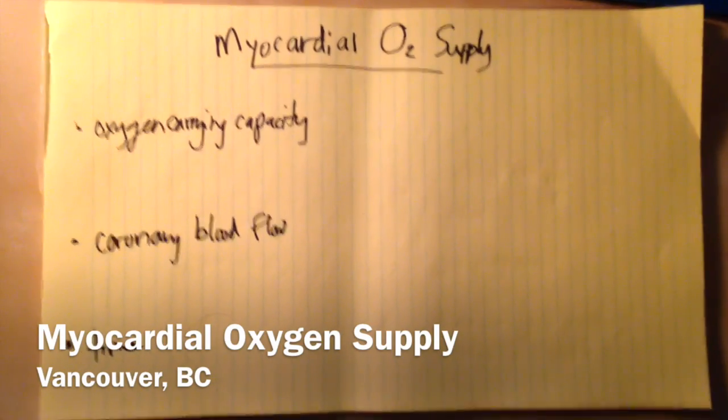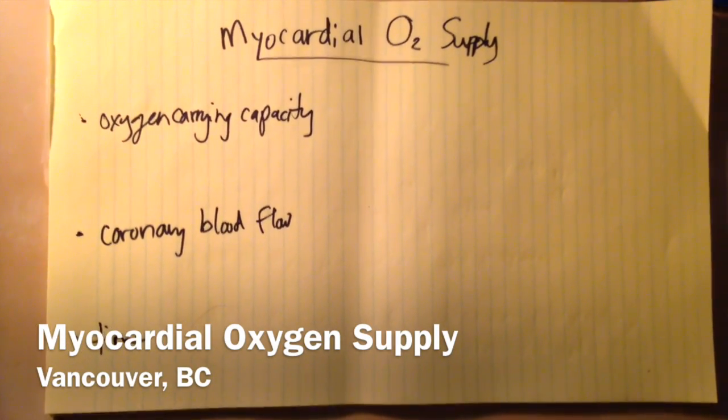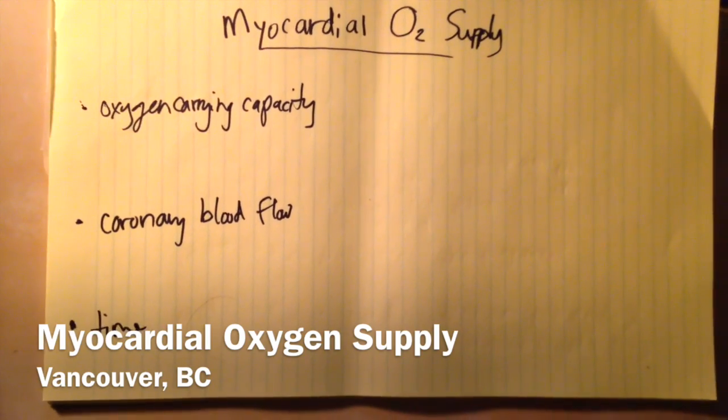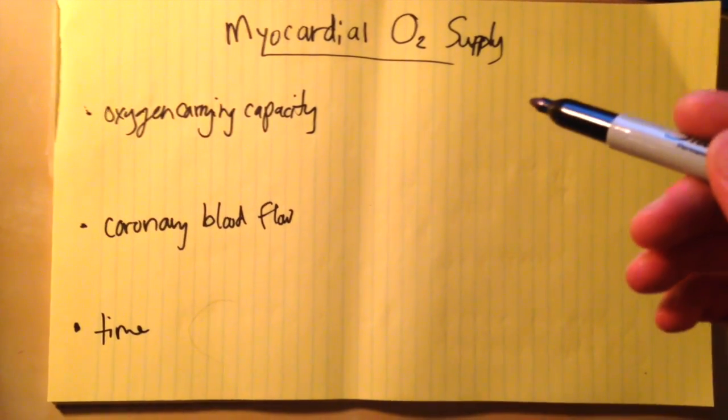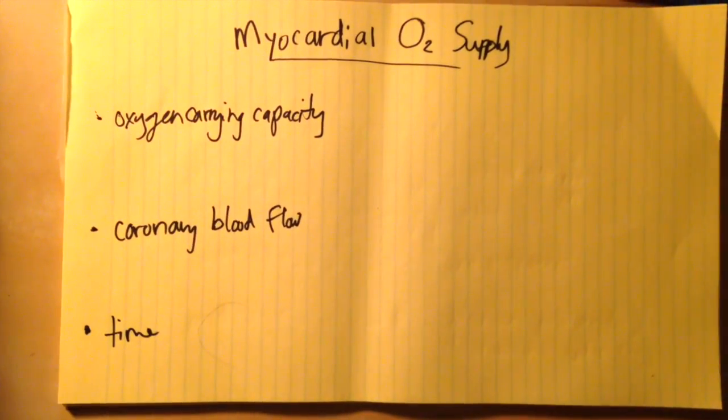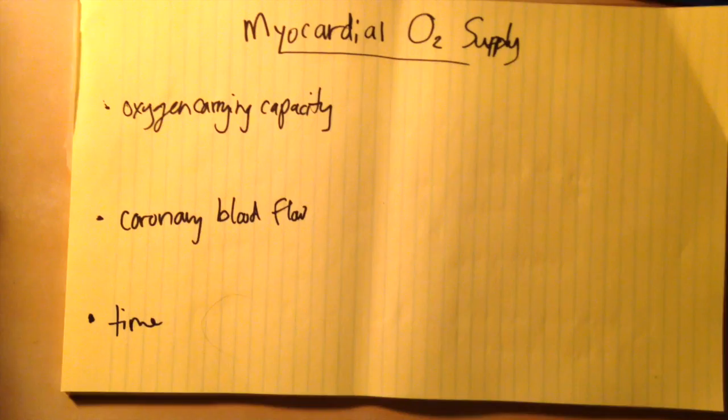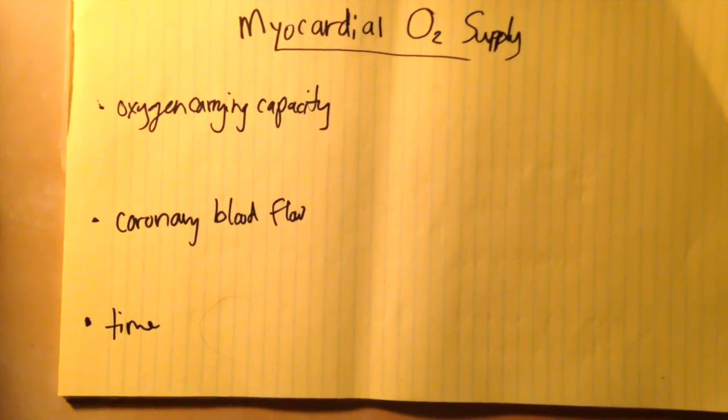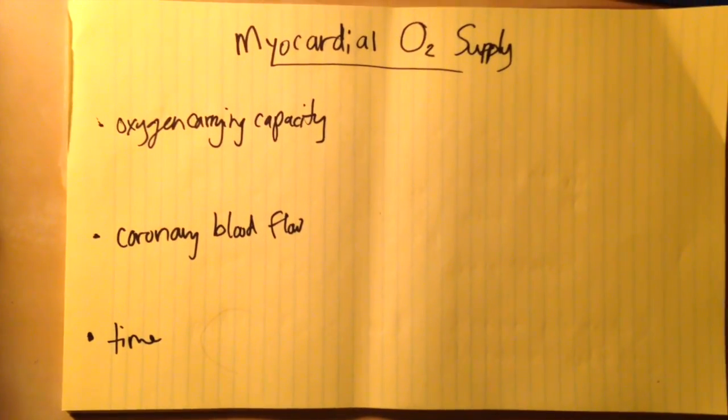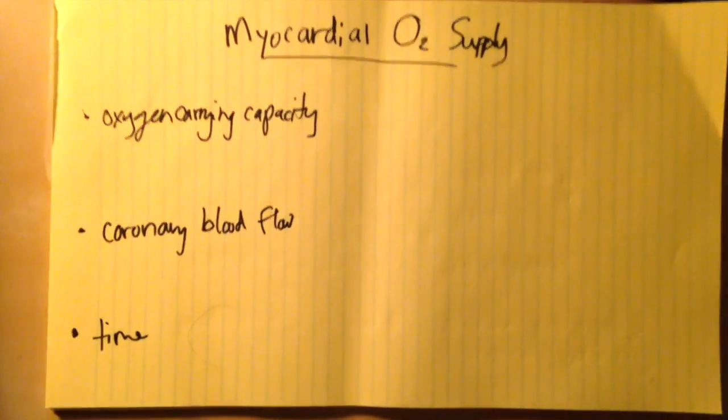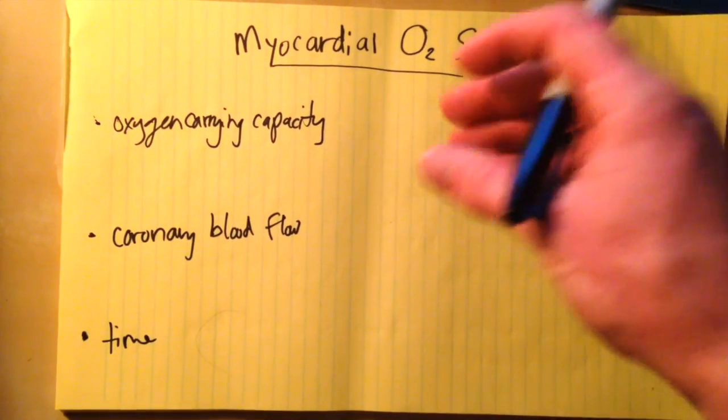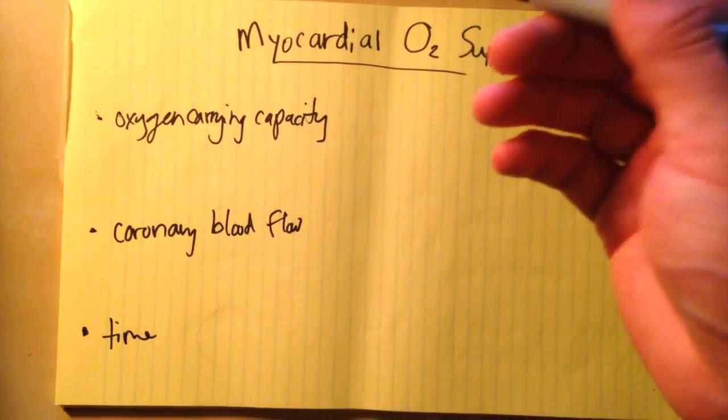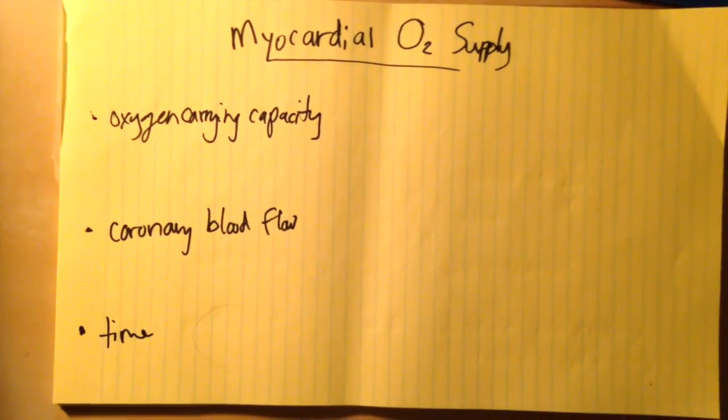Tonight I'd like to talk about myocardial oxygen supply and the main factors that determine how much oxygen the myocardium sees. This is important because for cardiovascular conditions, this physiology impacts how we give anesthetics to these patients by figuring out the balance between myocardial oxygen supply and demand.